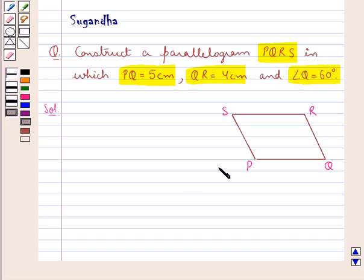This is the parallelogram PQRS in which we have PQ as 5 cm, QR as 4 cm and the angle Q included between the two sides PQ and QR as 60 degrees. So we need to now construct this parallelogram PQRS. We will do this construction step by step.